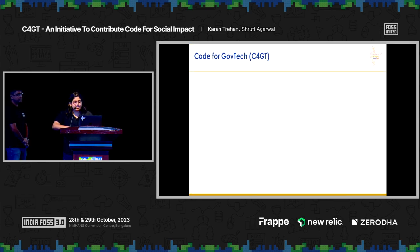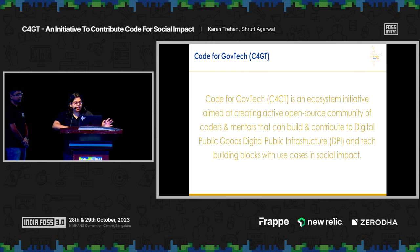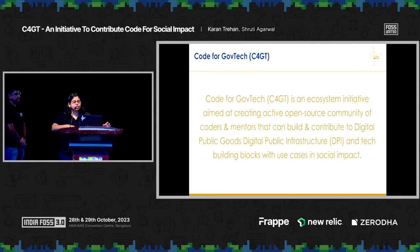C4GT is an ecosystem initiative to build an open source community of coders and mentors around digital public goods, digital public infrastructure, or any tech building block that can contribute to social impact.